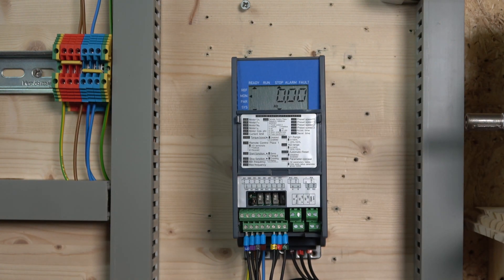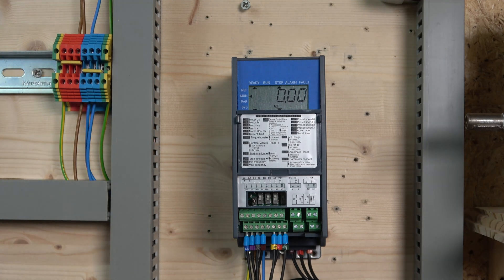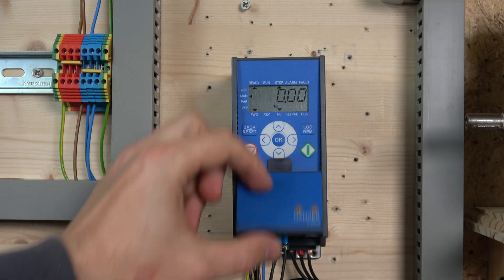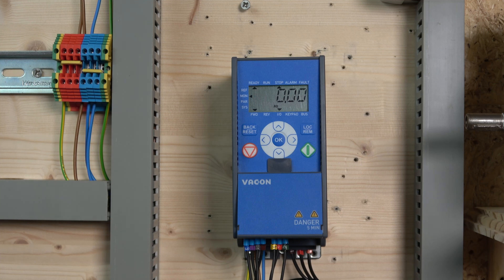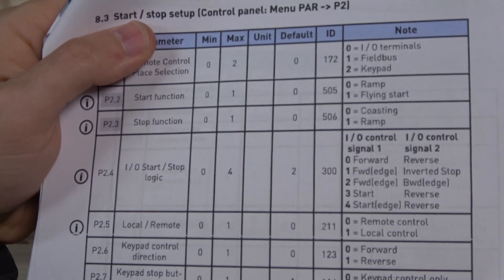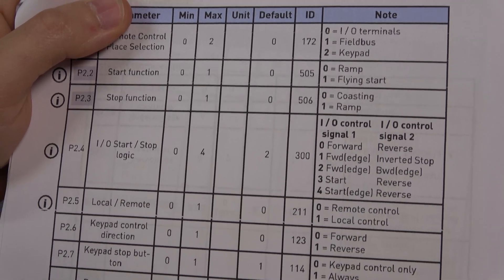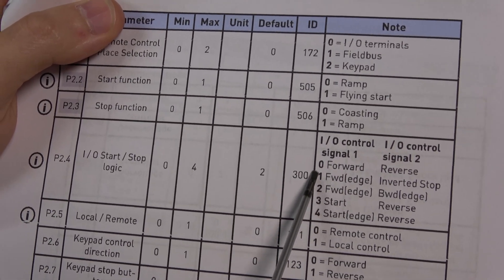Once you've done the wiring, we need to adjust how the digital inputs are configured. Go to I/O configuration in parameter 2.4 - I/O start stop logic. It shows signal one (digital input 1) and signal two (digital input 2). We're going to change it to 1, which is forward edge and inverted stop.